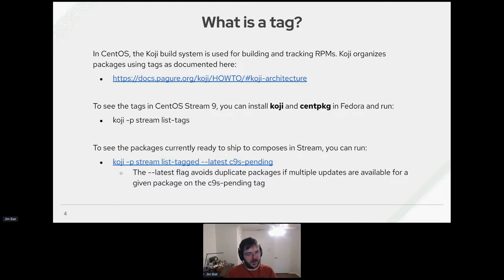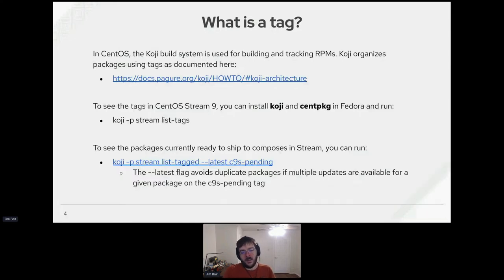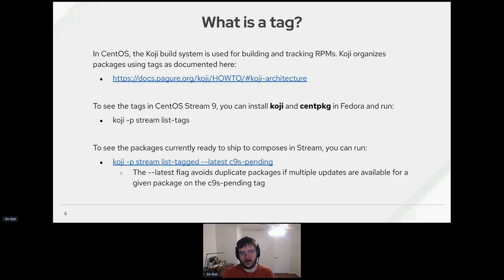You can list all the tags using the Koji command: if you install the koji and centos-packager packages, you can run `koji -p stream list-tags`. That gives you a big list of all available tags. Sometimes there are specialty tags for special builds — traditionally called side tags — for things like a very large build where you want maybe 10 updates to ship all at the same time and test together. In our example, we want to test RPM Inspect against everything we think we'll be shipping to a customer, so we run `koji -p stream list-tag --latest C9S-pending`.